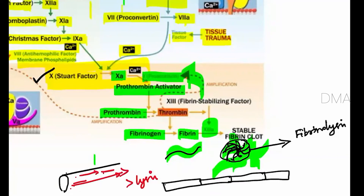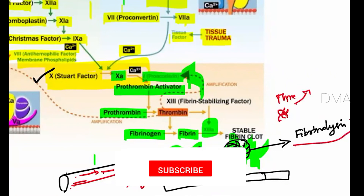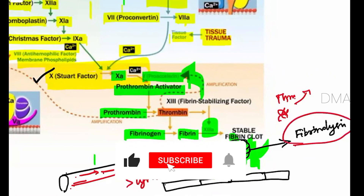This retained fibrin clot is called a thrombus. If it is not lysed after tissue recovery, there is a chance the fibrin clot will break down, and from the thrombus, emboli can form and travel to cause blockage in minor arteries. This is the importance of why the fibrinolytic mechanism is involved.